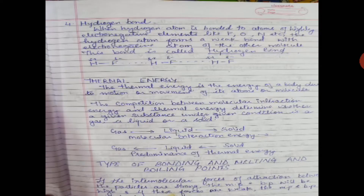Next is the hydrogen bond. When a hydrogen atom is bonded to atoms of highly electronegative elements like fluorine, oxygen, nitrogen, etc., the hydrogen atom forms a weak bond with the electronegative atom of the other molecule — this bond is called a hydrogen bond. However, the hydrogen bond is stronger than London forces, dipole-dipole interaction, or dipole-induced dipole interaction. Hydrogen bonds are present in water molecules. Molecules also exert repulsion forces on one another; when two molecules are brought into close contact, repulsion forces start operating between the electron clouds and nuclei of the two molecules.